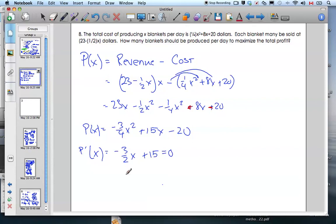And I'm going to get minus three-halves X equals minus 15. Multiply both sides by negative two-thirds. Those will cancel, and so X will be ten blankets.